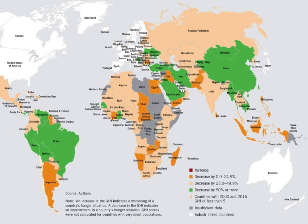The GHI is calculated annually, and its results appear in a report issued in October each year. Created in 2006, the GHI was initially published by the International Food Policy Research Institute and Welthungerhilfe. In 2007, the Irish NGO Concern Worldwide also became a co-publisher.